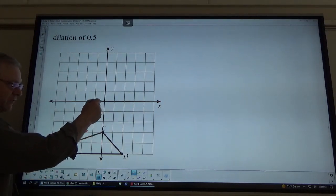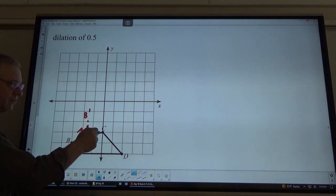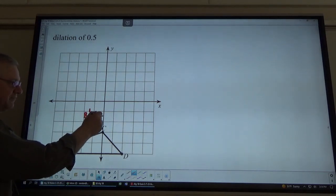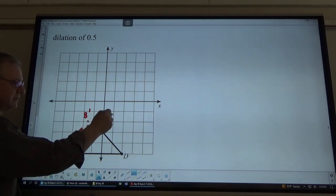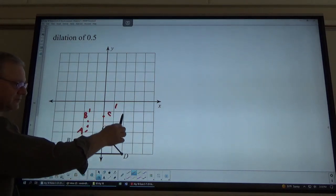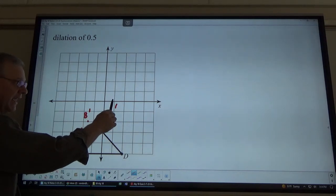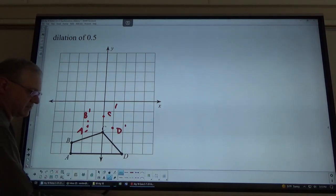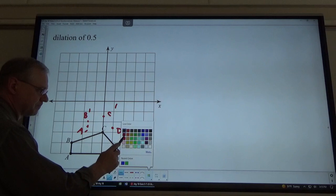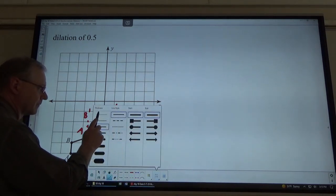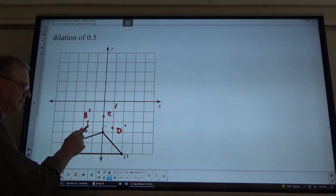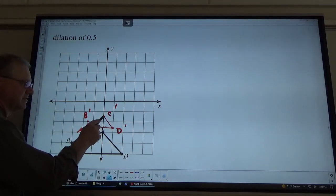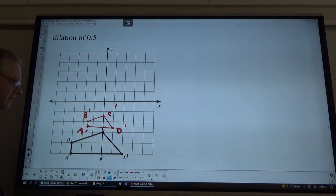C is straight down, left right nothing, straight down 3. So, I'm going to go down 1½. And there's C'. D is to the right 2, down 5. So, that's right 1, half of it, down 2½. And there's D'. So, now we just have to connect these up. B to A, A to D, D to C, and back to B. And there is your half scale dilation, or a scale factor of 1½ dilation.